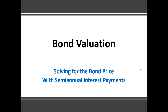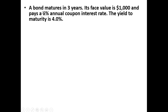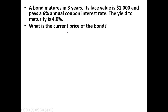Hello. In this video, we're going to be solving for the bond's price when dealing with semi-annual interest payments. We have a bond that matures in three years. The bond's face value is $1,000, so at the end of three years the bondholder will receive the face value back. This bond pays an annual 6% coupon interest rate, and the yield to maturity is 4%. What is the current price of the bond?